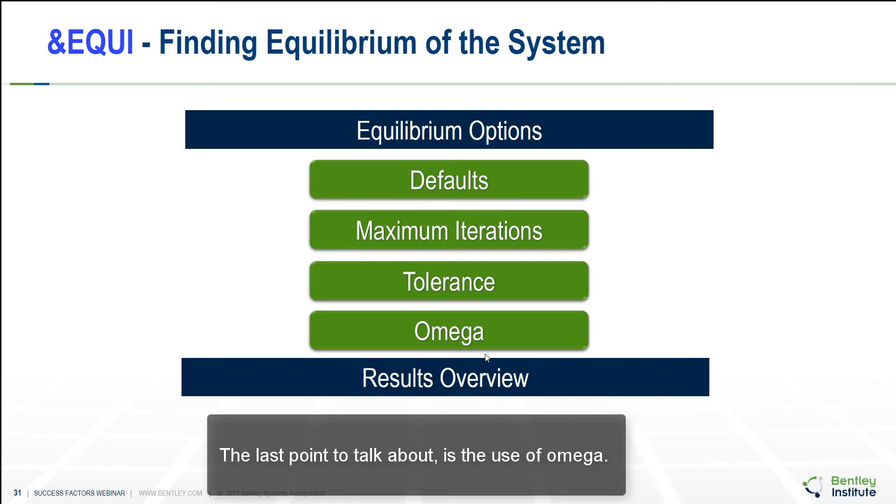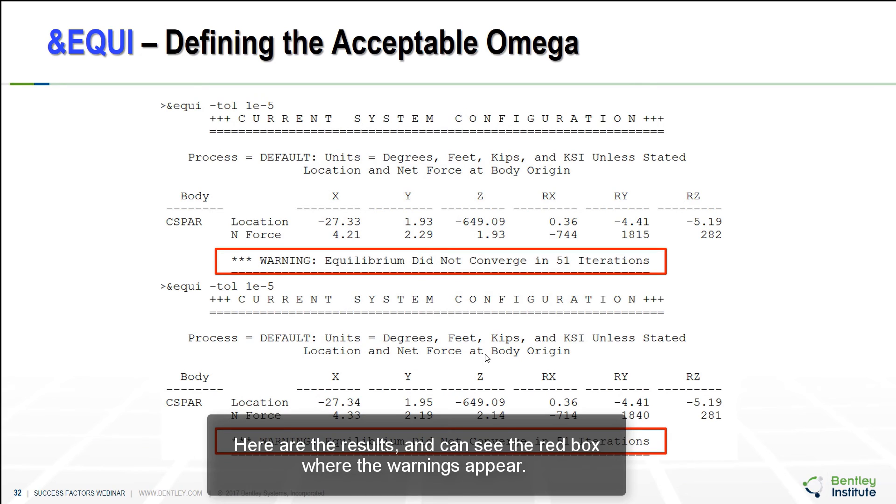The last point to talk about is the use of omega. As before while we talking about them we review several sets of results. Here the results and as you can see the red box where the warnings appear. There is a large step are needed if we want to get close within the maximum number of iterations. You see the position is almost the same. In both tries equilibrium was not found. To have the largest steps we need to increase the limits on step size.